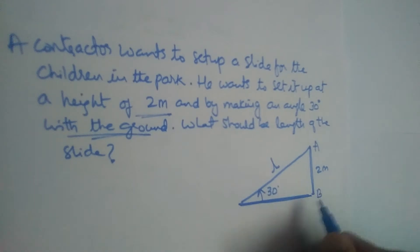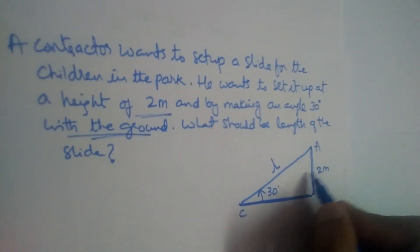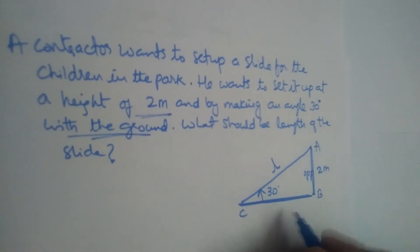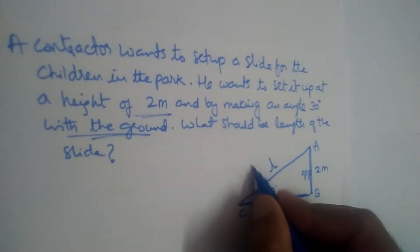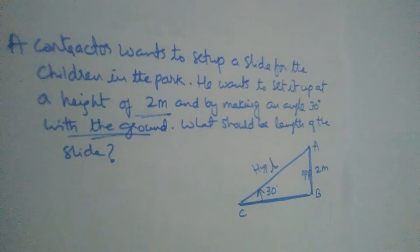Let us name this triangle A, B, and C. So to angle C, AB is the opposite side. And AC is the hypotenuse side.